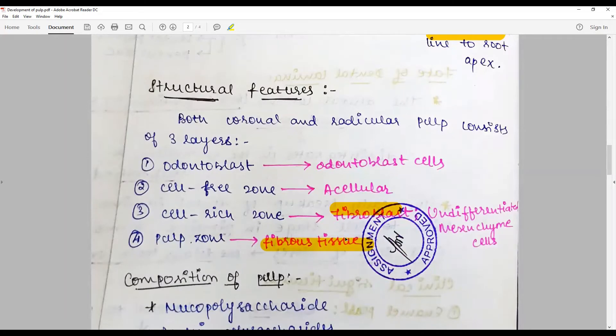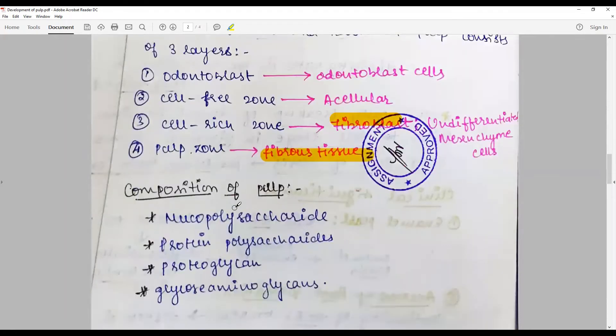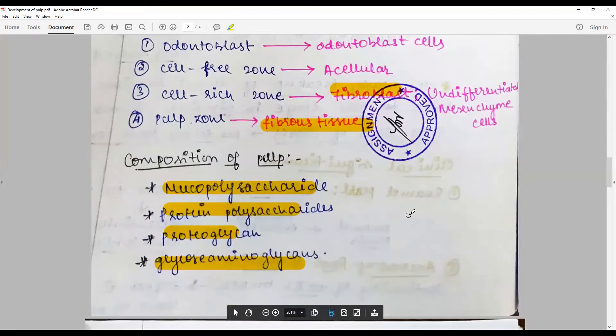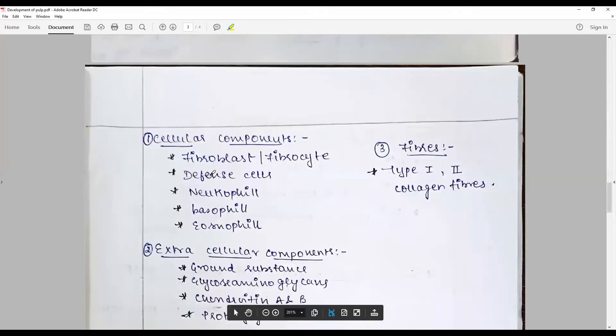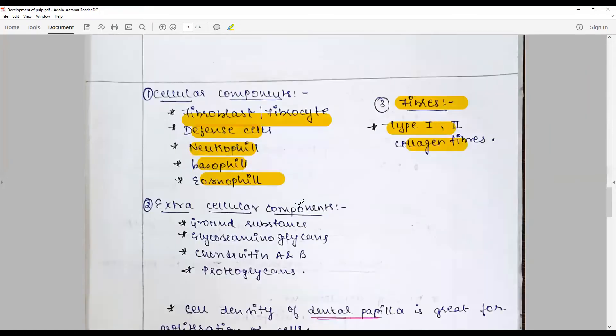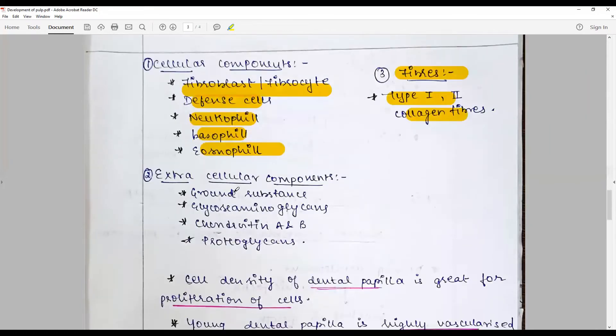The composition of pulp is made up of mucopolysaccharides, proteins, proteoglycans, and glycosaminoglycans. The cellular components include the fibroblasts and fibrocytes, different cells like neutrophils, basophils, and eosinophils. The fibers in the pulp are predominantly type 1 and type 2 collagen fibers.